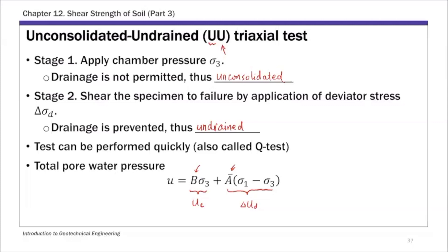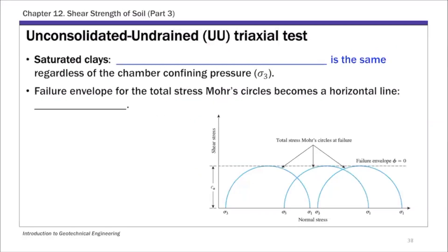This UU test is typically conducted on saturated clays, saturated cohesive soils, and is based on an important property of saturated clays. For saturated cohesive soils, the deviator stress at failure is the same regardless of the chamber pressure. So this deviator stress at failure, we call Δσ_dF, is the same regardless of the σ3 value applied.